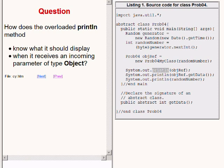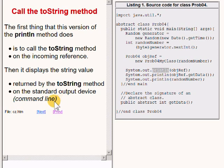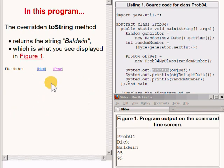To resolve this dilemma, the first thing this version of the println method does is call the toString method on the incoming object's reference. Then it displays the string value returned by the toString method on the standard output device, which in most cases is the command line screen. In this case, the overridden toString method returns the string 'Baldwin,' which you see displayed on the bottom right of your screen.